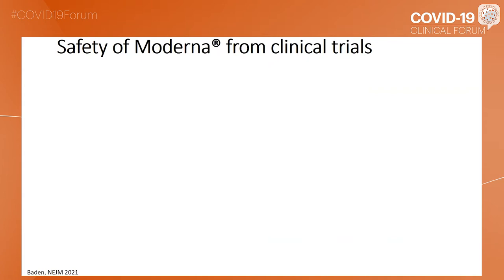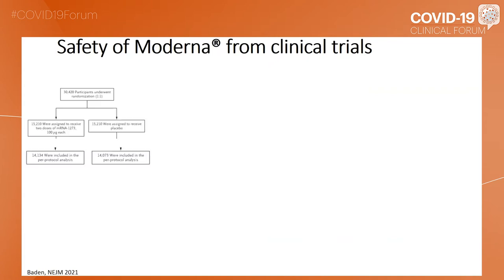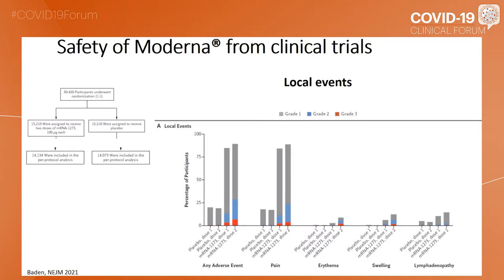If we switch now to the safety of Moderna, again from clinical trials, the number of patients included in those phase two and three trials is shown here. These are the local events, and as you see across all ages, it is mainly pain and a little bit of lymphadenopathy.